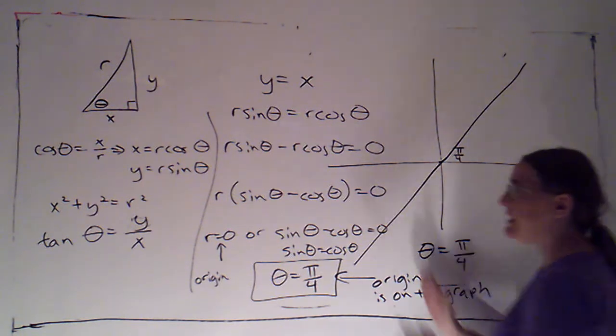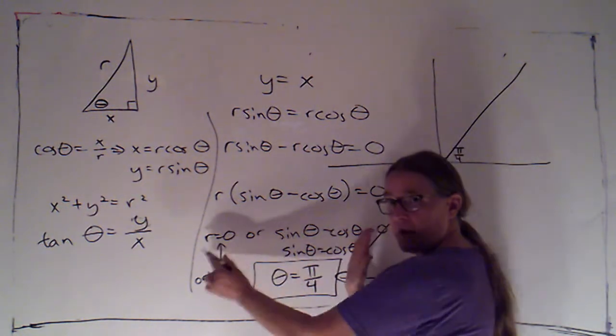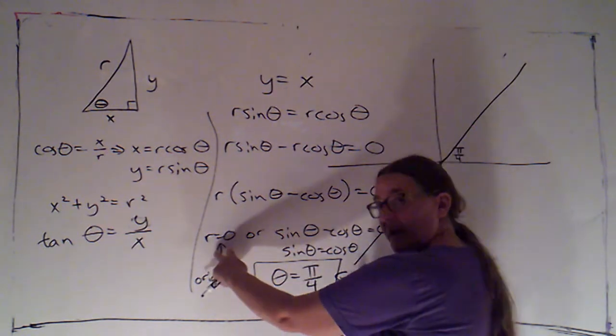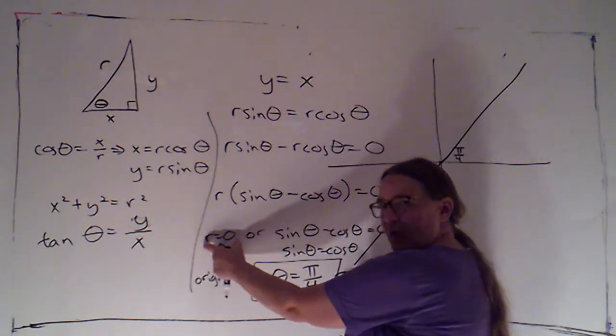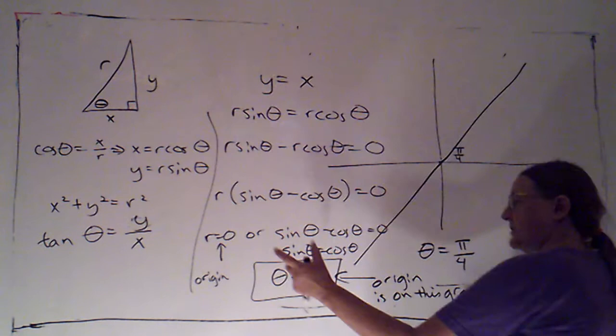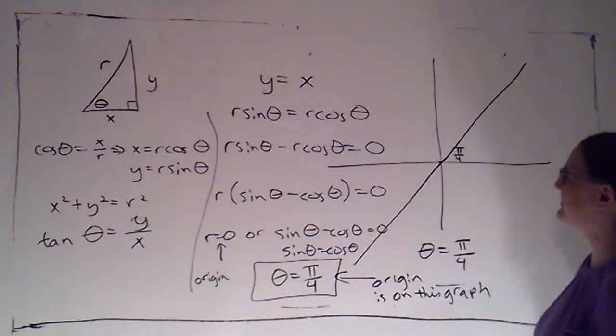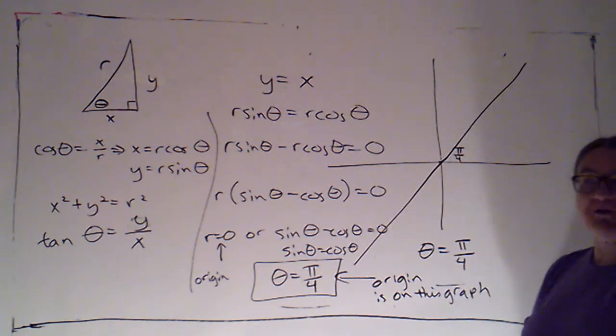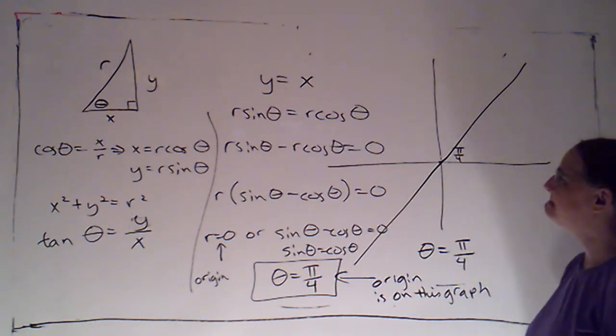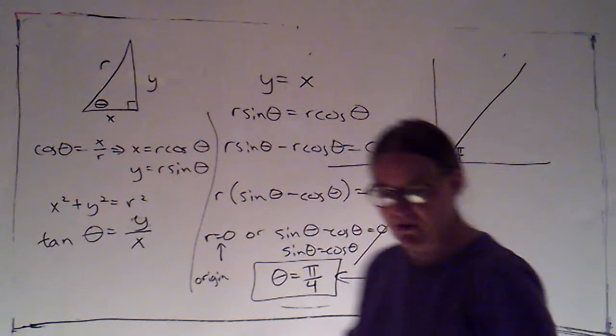So very often this will happen, that you can factor and you'll get two options, but the geometric solution, the graph of one option, will be included on the graph of the other option, in which case you can just write that option. So an equation in polar coordinates for this line would be theta equals pi over four. Excellent. We'll do more in a moment.